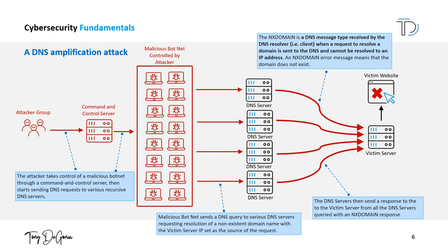DNS amplification attacks can be mitigated by proper configuration and maintenance of DNS servers, including rate limiting, filtering traffic, monitoring and logging, as well as using specialized DDoS protection services. It's also important to ensure that DNS servers are not being used as open resolvers, which can be easily misused by attackers.